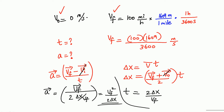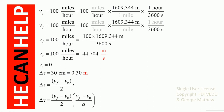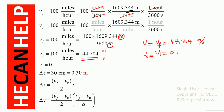We are given the final velocity and we are given delta x, so we can find the acceleration. Final velocity is 100 miles per hour. Using the exact conversion — 1609.344 meters per mile and 3600 seconds per hour — miles and hours cancel, giving us the final velocity equal to 44.704 meters per second.